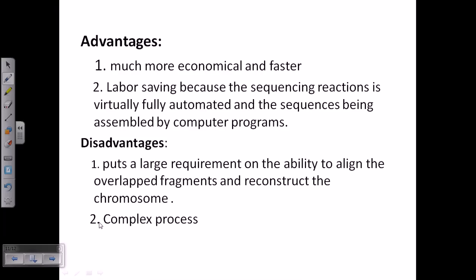And obviously it is a complex process. Now if the genome is complex then this process is very dangerous to be done. The advantages are much more economical and much faster because we don't need to get a physical map. We don't need to provide any kind of sequence markings or sequence numbering. We just simply start doing it randomly.